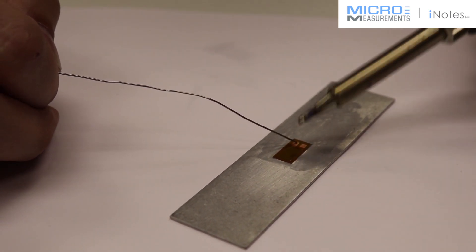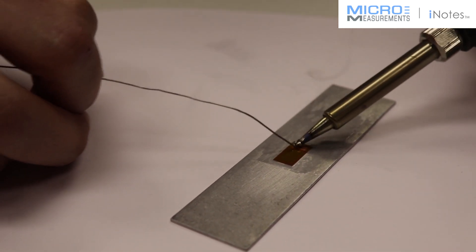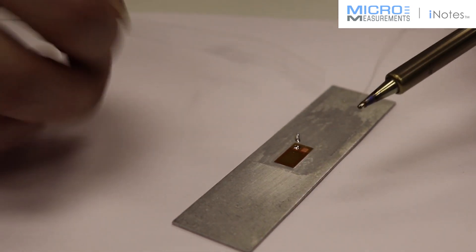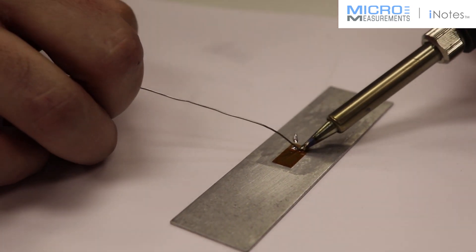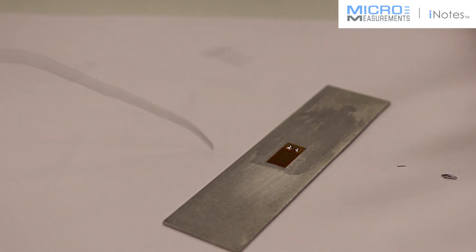He's going to tin the tip, place the solder in the target area, press the iron firmly down, add fresh solder and flux, and remove the two together, leaving behind two nice little rounded pillows of solder.